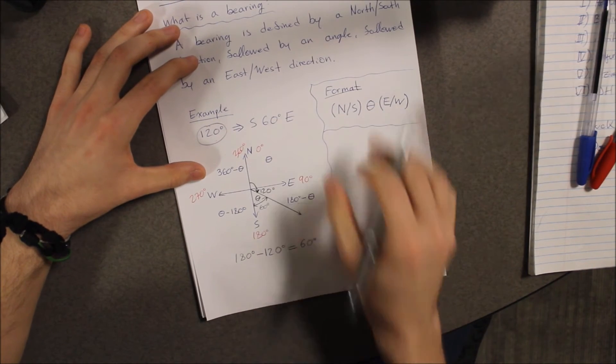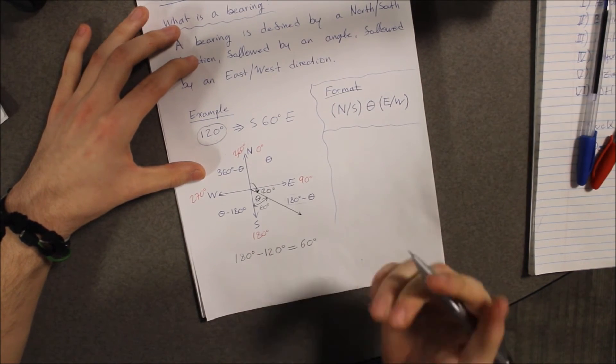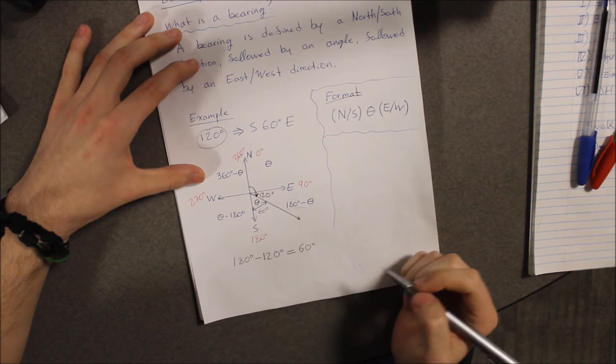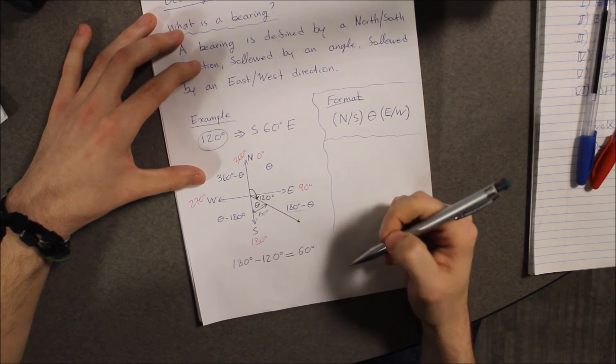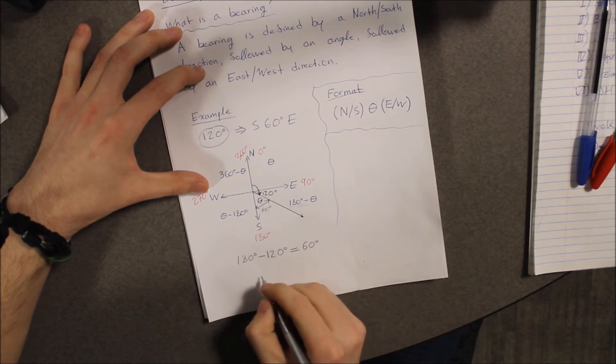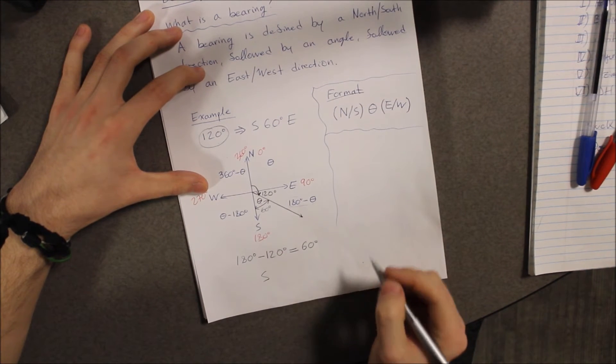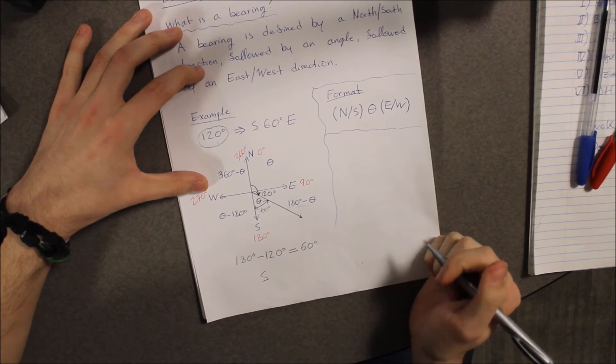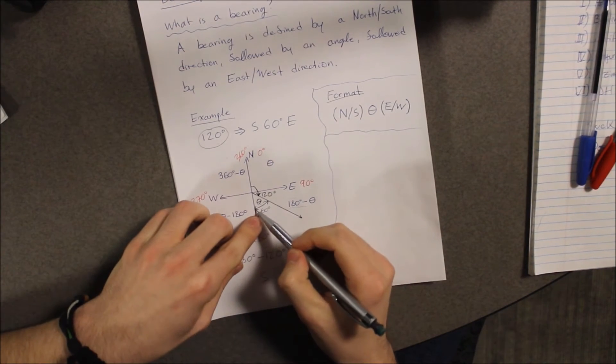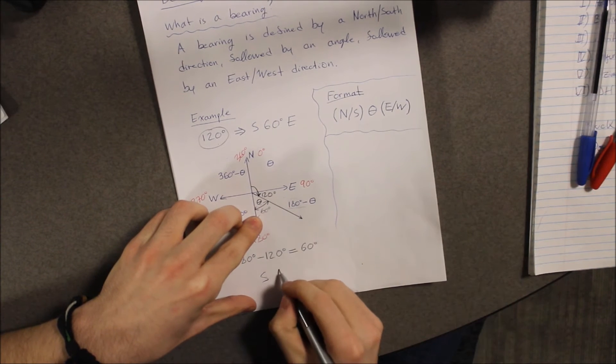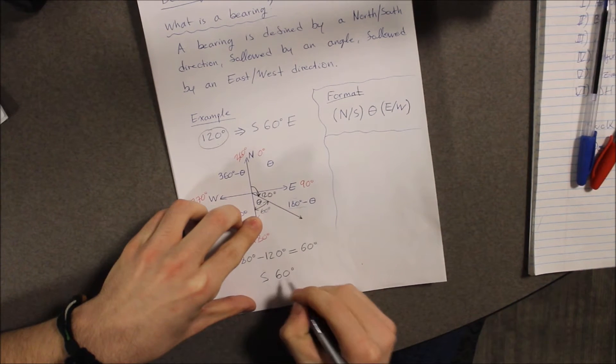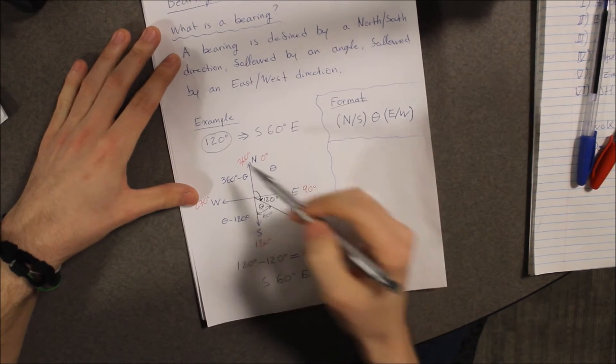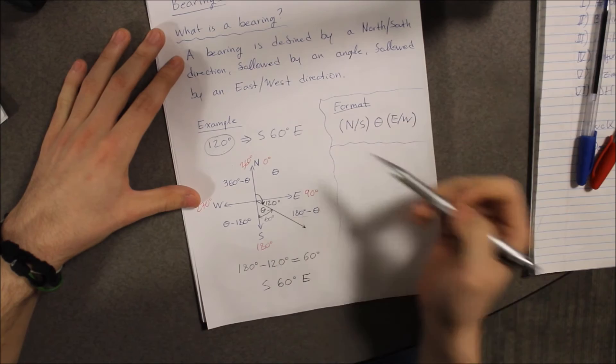Now, how to put this into this format? So first, you look at the general direction of your angle. It is going down. Therefore, it is going south. How many degrees to a certain direction is it going in? Well, it is going 60 degrees in the direction of east. Therefore, 60 degrees east. That is how you convert degrees to a bearing.